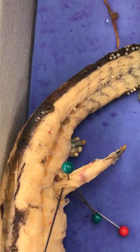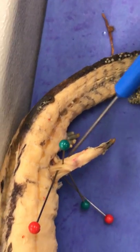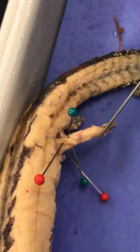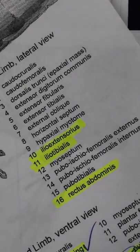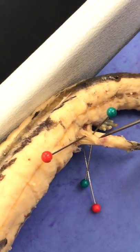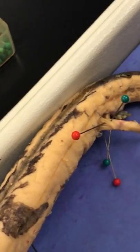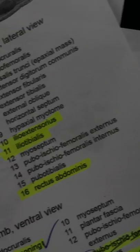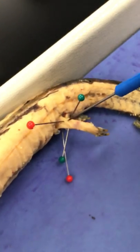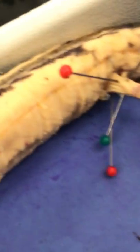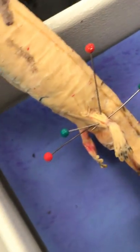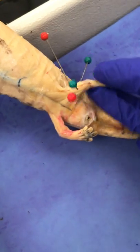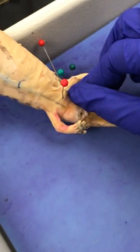So the green one was which one? This one is iliotibialis. Wait, I thought iliotibialis is inside. No, inside is ilioextensorius. Ilioextensorius is on the inside and iliotibialis is on the outside. Yeah. And then the red pin — ilioextensorius, it's inside. The red is inside and the green is outside. And the green one on the bottom is pubioischiotibialis. The red one is also pubioischiotibialis. Alright, thank you.